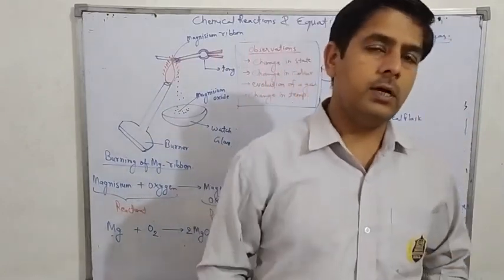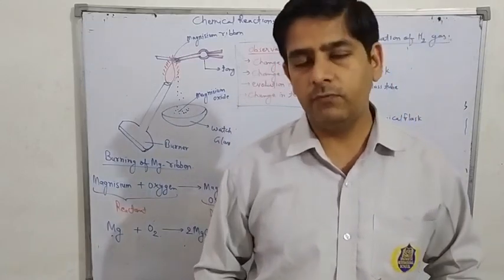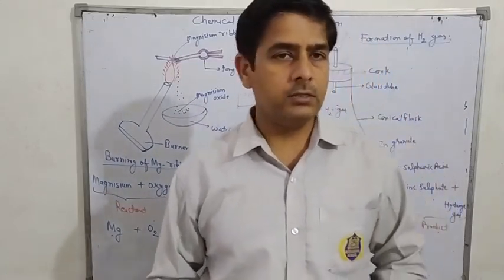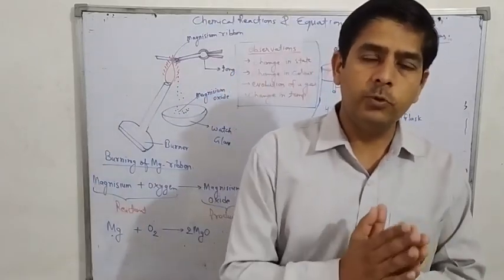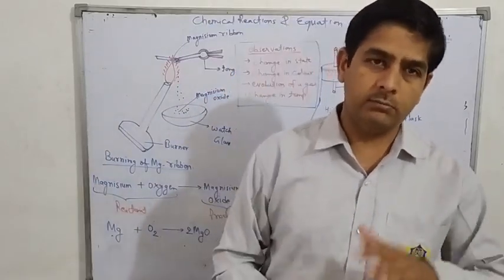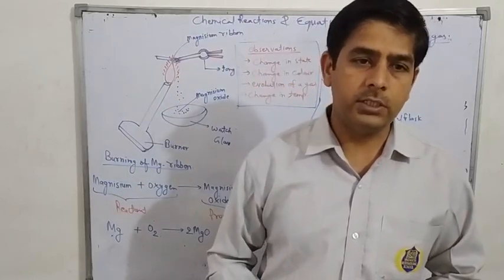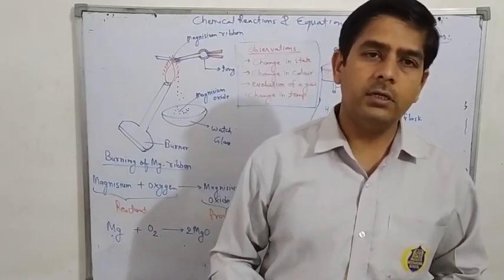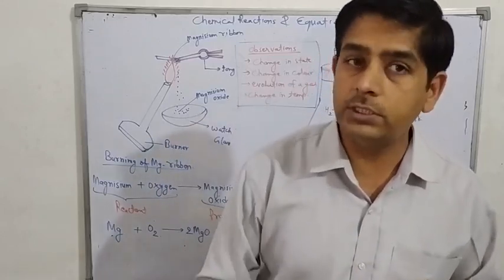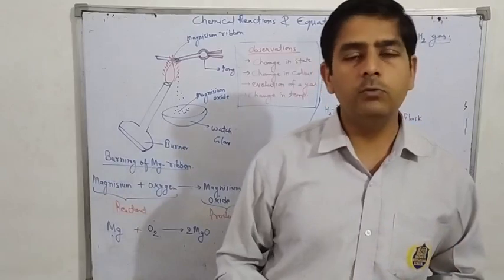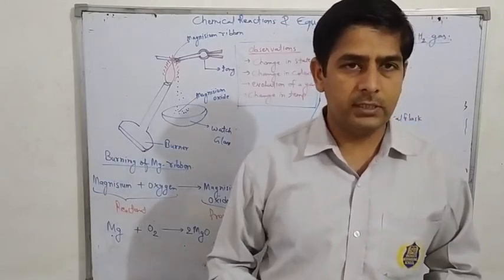In earlier classes you have already studied about chemical changes and physical changes. When there is a change in the composition of a substance during any process, that change is called a chemical change. If you observe that the chemical composition of a substance is changing, then we say it is a chemical change.